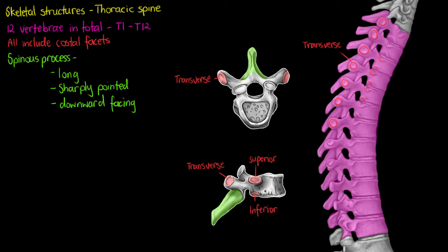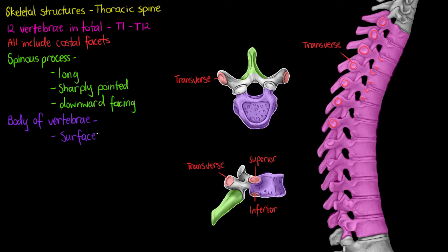The next area I'm highlighting here in purple is the body of our thoracic vertebrae — the body being the largest portion of the individual vertebra. It will also be the area that serves as the surface for our intervertebral discs. I'll draw that up here so we can get a better picture of where those intervertebral discs are going to sit.